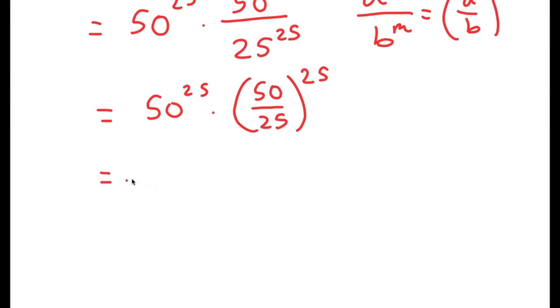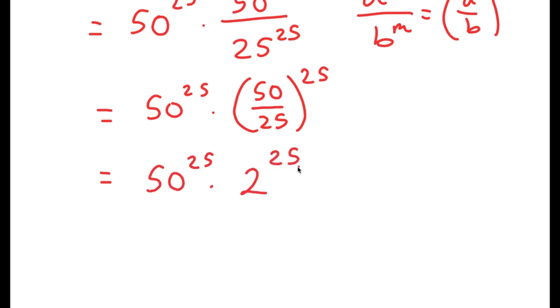This turns into 50 to the power of 25 times — well, 50 divided by 25 is 2 — so times 2 to the power of 25.